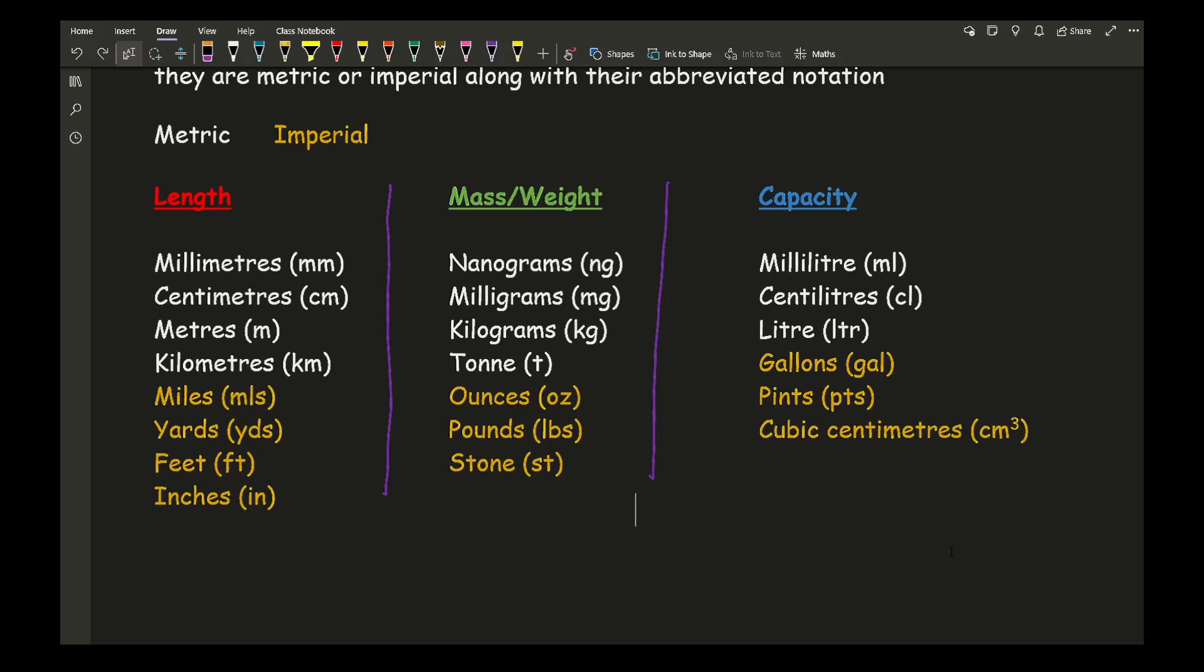Nanograms - you're probably looking at a grain of rice. Milligrams - maybe a chocolate bar. Kilograms - maybe the weight of someone. A tonne - maybe the weight of a car. Ounces would be some ingredients. Pounds could be a person or food. Stone is probably more likely used in human weight.